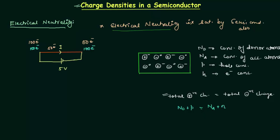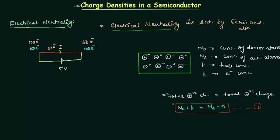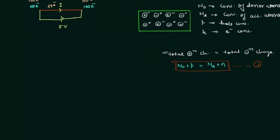This gives us the important relation: N_d + p = N_a + n. We will call this Equation 1. This is the key relation derived from electrical neutrality that we will use to find charge densities in semiconductors. We now have two cases to consider.